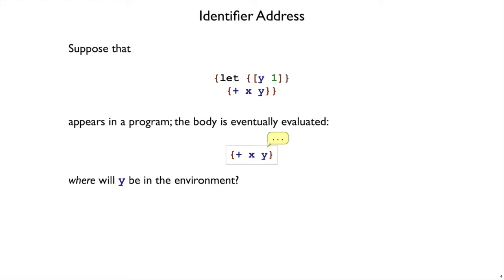If we change the big program and change the example so that we ask about let y be 1 and plus xy, and we ask where is y going to be, well of course the answer is still the same. Y is at the beginning. It wasn't about the name x or y, it was about what was the most recent let that got evaluated.